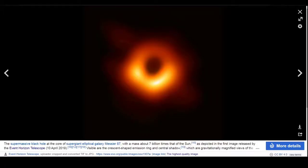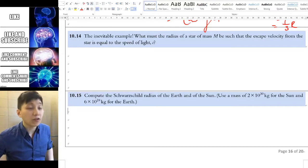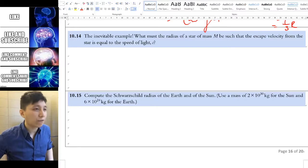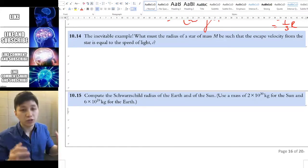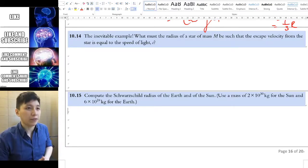The basic idea of black hole is simply that it is so massive that even the light cannot escape from it. Interestingly, with the knowledge of escape velocity you learned in the previous video, you can actually find out the expression of a star, how massive and how much radius it needs to meet in order to reach the requirement to be the black hole.